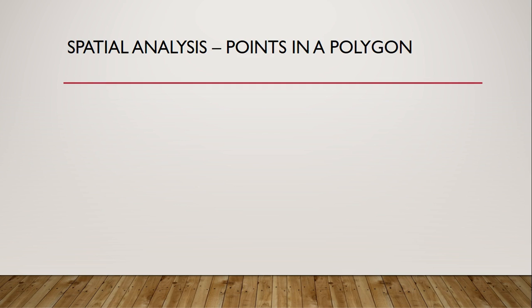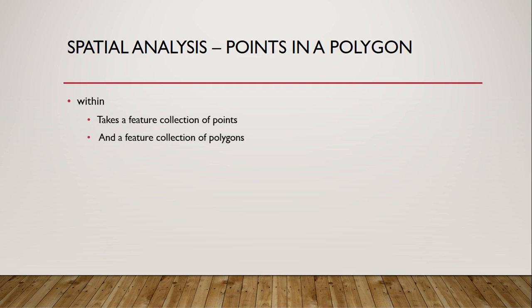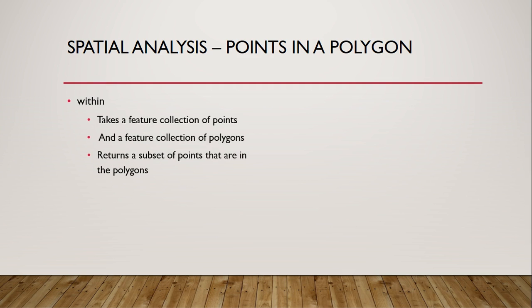Turf has some methods that may help us. The within method takes a feature collection of points and a feature collection of polygons and returns a subset of the original feature collection of points that fall within any of the polygons. So we could create a half mile buffer around the line and use that with the eagle points to get the subset of eagle nests within half a mile of the proposed project. Then we could loop through that collection of points and count how many are active nests and how many are inactive.